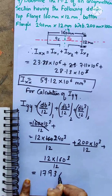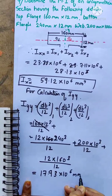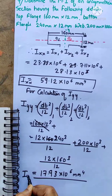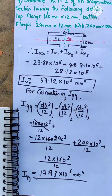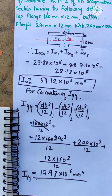Adding all three terms, Iyy = 17.93 × 10⁶ mm⁴. So we have found both Ixx and Iyy for the unsymmetrical I-section. In the next video, we will look at the T-section and built-up sections. Thank you.